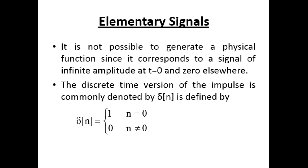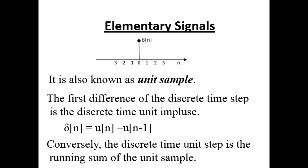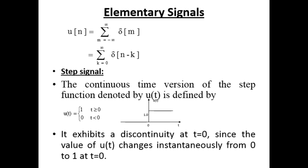It is not possible to generate a physical impulse function since it corresponds to a signal of infinite amplitude at t = 0. The discrete time version of the impulse is denoted by δ(n), defined as δ(n) = 1 when n = 0, and 0 when n ≠ 0 — also known as the unit sample. The first difference of the discrete time step is the discrete time unit impulse: δ(n) = u(n) − u(n − 1). The discrete time unit step is the running sum of the unit sample: u(n) = Σ δ(n − k) for k = 0 to ∞.